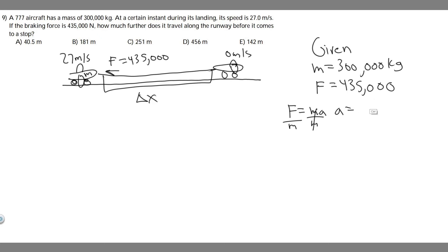So if we want to solve for the acceleration, you're just going to put the force in, which is 435,000, and then divide by the mass, which is 300,000. And when you do this, you're going to get the acceleration is 1.45. But keep in mind, it's going in the opposite direction because we're slowing down. So the acceleration has to be negative. So minus 1.45 meters per second squared is our acceleration.